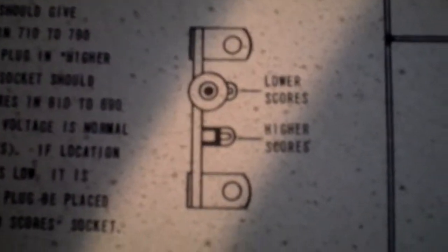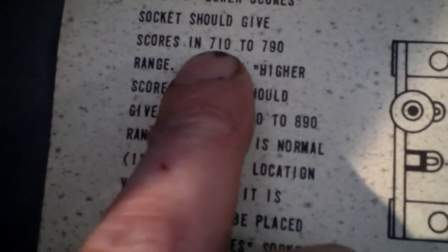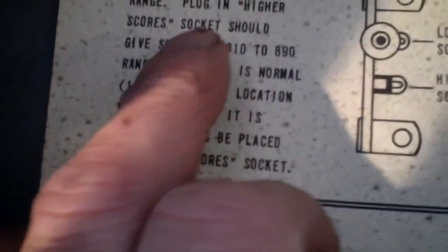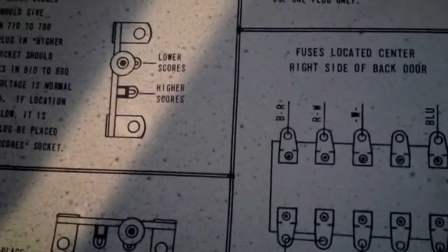It talks about the road motor speed and there's an adjustment. I did have it on the high score adjustment and still wasn't getting the high scores. If you read this it says that on the lower scores you should average between 710 and 790, and on the higher scores you should be able to get 810 to 890.